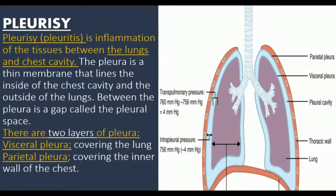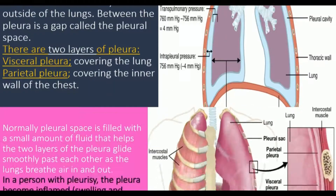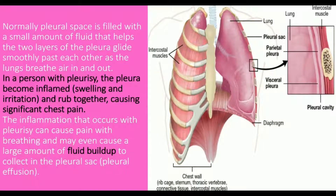Pleurisy is inflammation of the tissues between the lungs and chest cavity. The pleura is a thin membrane that lines the inside of the chest cavity and the outside of the lungs. Between the pleura is a gap called the pleural space. There are two layers of pleura — one covering the lung and the other covering the inner wall of the chest.